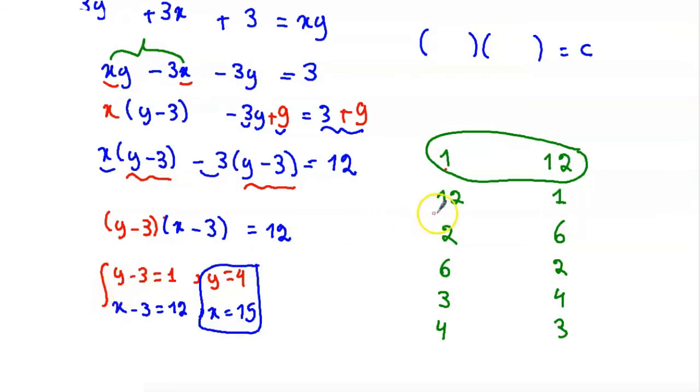Now when y minus 3 equal to 12, second case, and x minus 3 equal to 1, we will get y equal to 15 and x equal to 4.